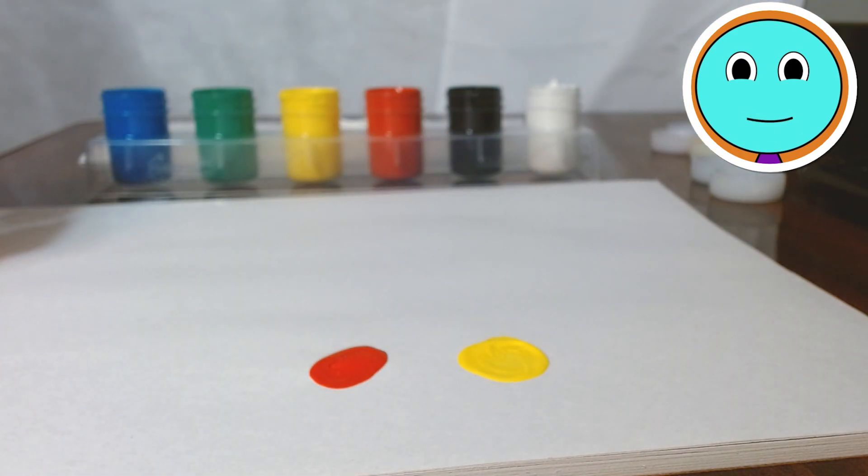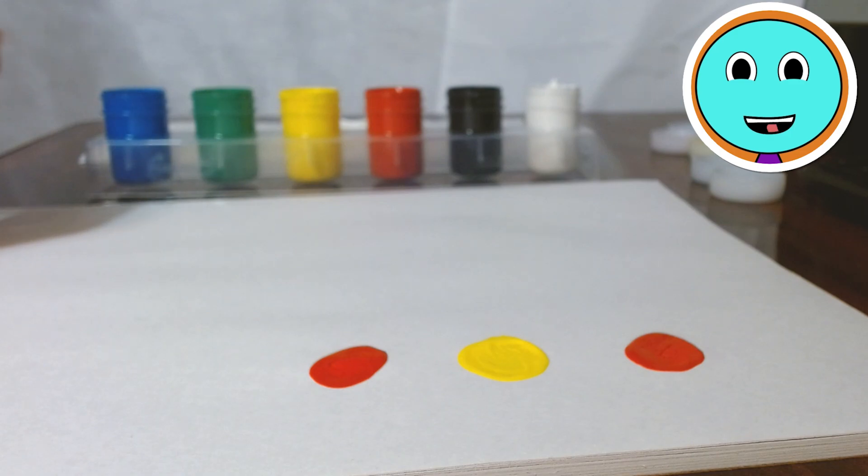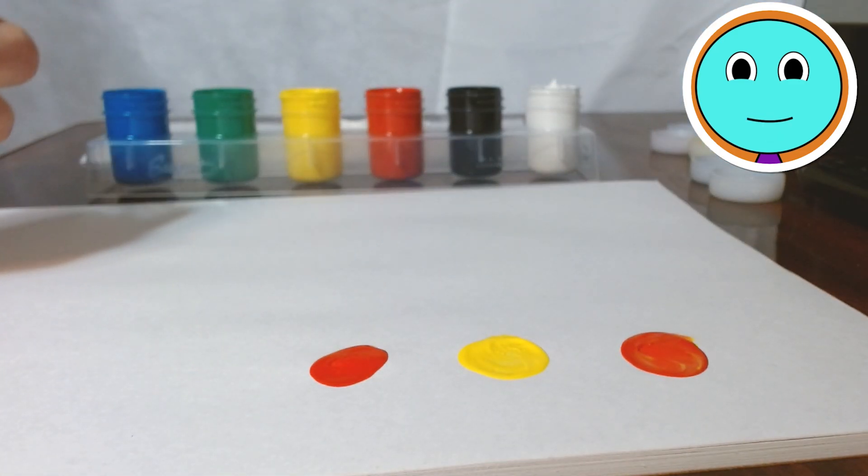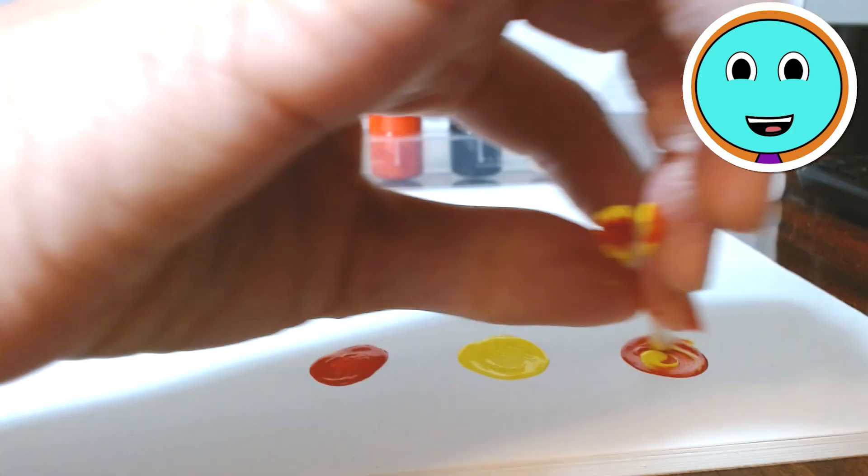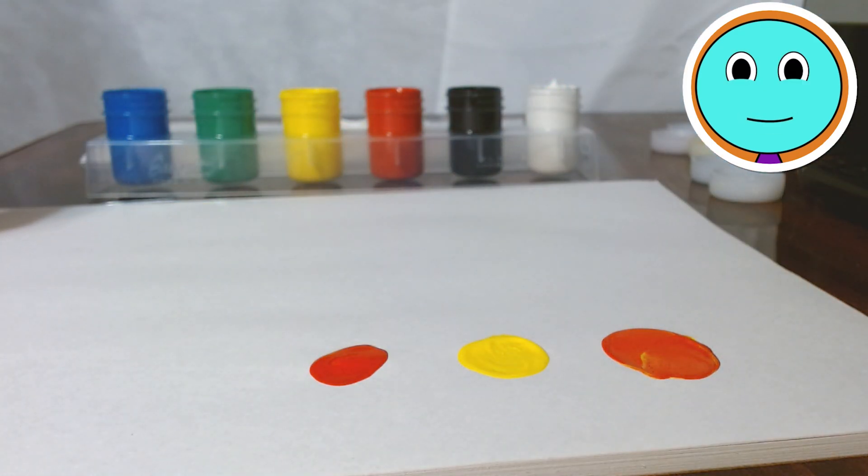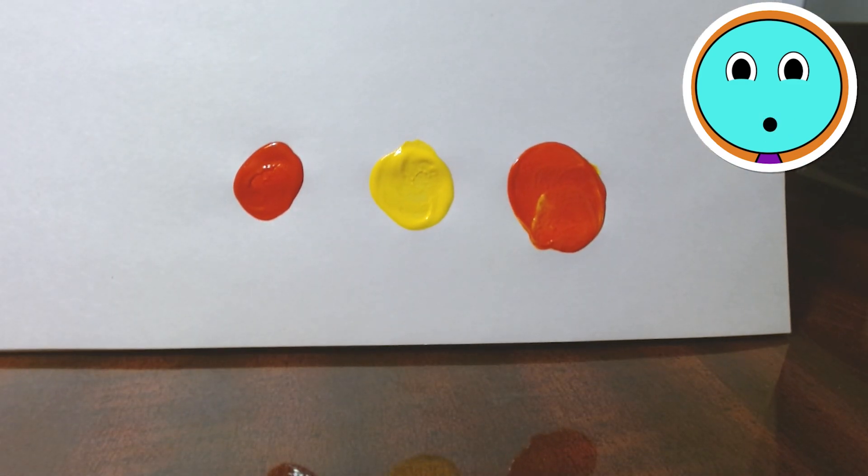Now she's mixing the red and the yellow. It's looking like it's turning orange. Let's see the finished product. The finished product is an orange circle.